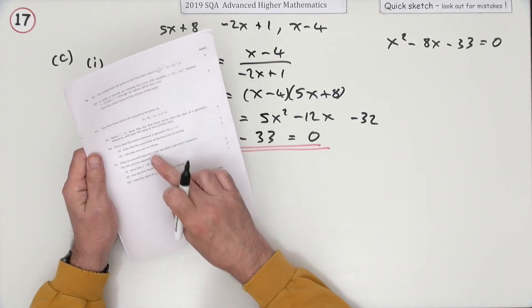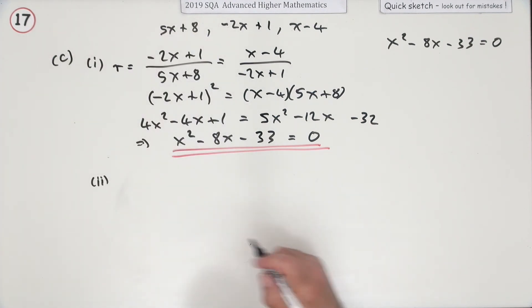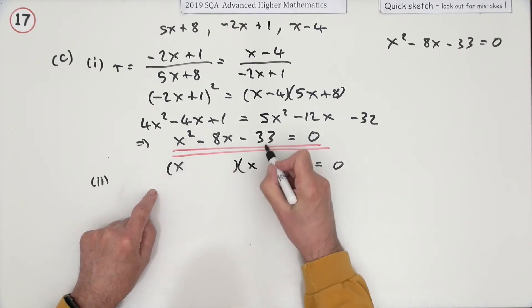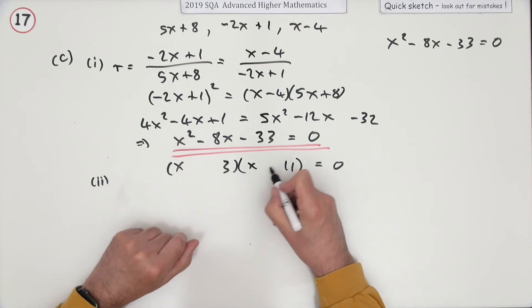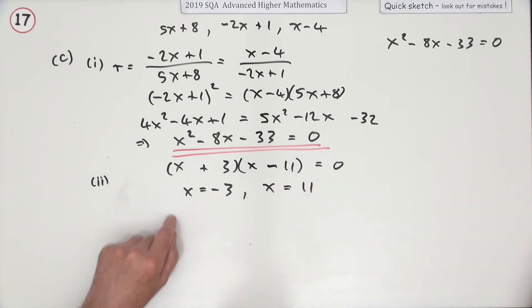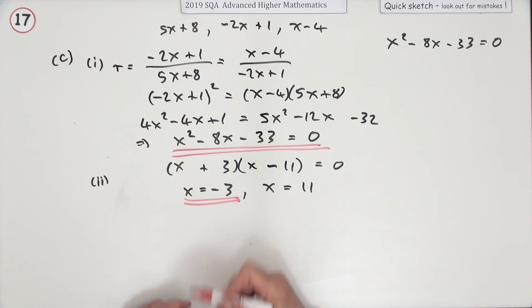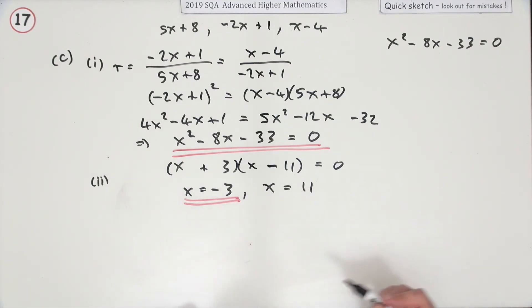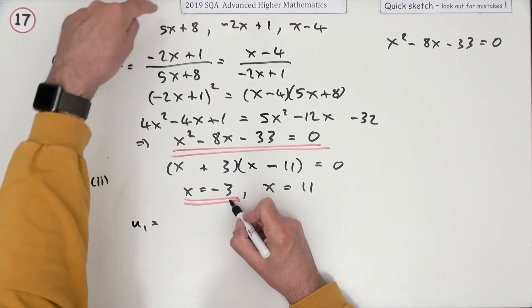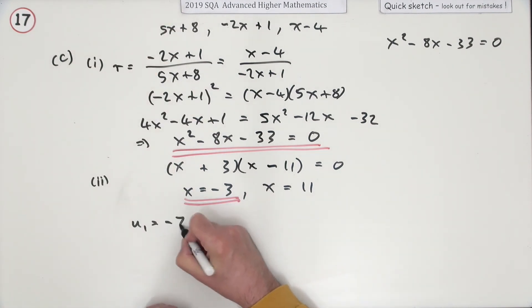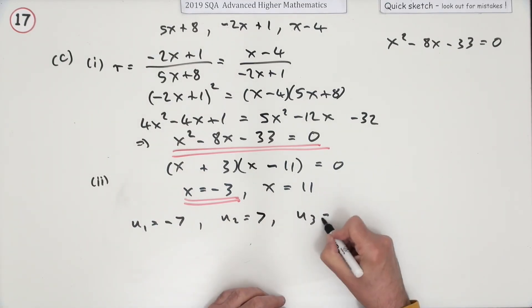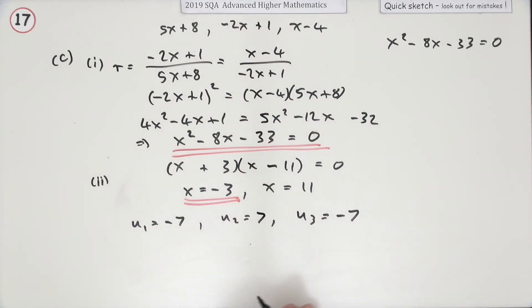Solving x² minus 8x minus 33 = 0: factorising gives (x minus 11)(x plus 3) = 0, so x equals 11 or x equals negative 3. Since x = 11 was already found, the second value is x = negative 3. Substituting: u1 = negative 15 + 8 = negative 7, u2 = 6 + 1 = 7, and u3 = negative 3 minus 4 = negative 7. The first three terms are negative 7, 7, negative 7.